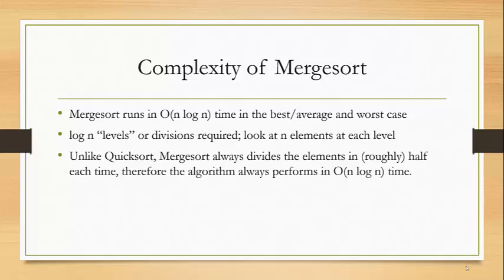What's the complexity of merge sort? Merge sort runs in O(n log n) time in the best, average, and worst case scenarios. Each time through the algorithm we divide the elements in half, so we have log n levels or divisions required. At each level, just like quick sort, we look at n elements. Unlike quick sort, however, merge sort always divides the elements in roughly half, so the algorithm always performs in O(n log n) time.